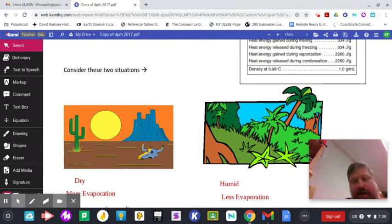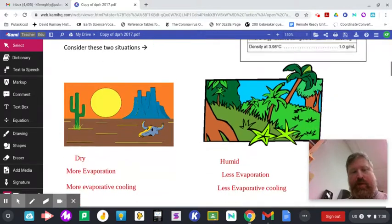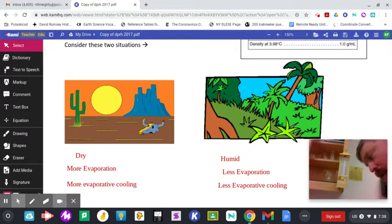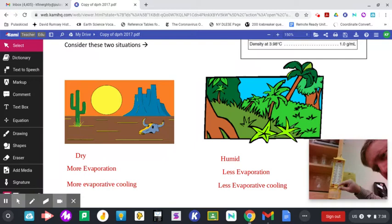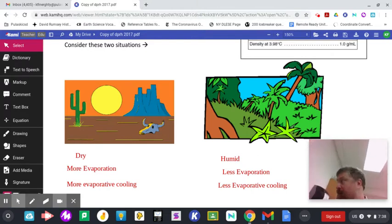If you remember this idea that here in the desert it's very dry, therefore there's gonna be a lot of evaporation, therefore the wet bulb, more evaporative cooling, so the wet bulb which should be this thing right here would go down by more. Whereas if it's very humid, less evaporation and less cooling.